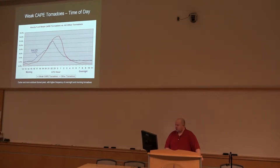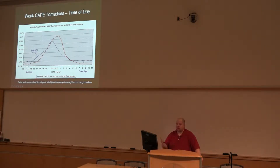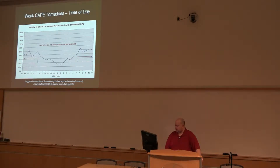This is the hourly percentage of weak CAPE tornadoes versus all other tornadoes. The other tornadoes — think typical or stronger buoyancy — shown in red, have more of a delayed diurnal distribution. But look at the weak CAPE tornadoes: a higher percentage relatively early in the day — early morning, mid-morning, late morning — and more of a drop-off into the evening, with a comparatively higher percentage of cases overnight. This gets into aspects of vulnerability and situational awareness.